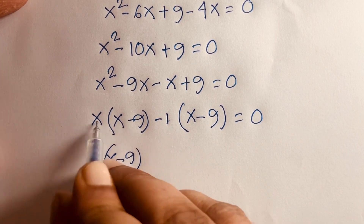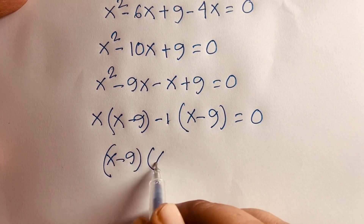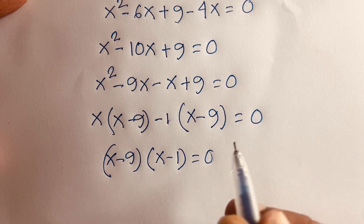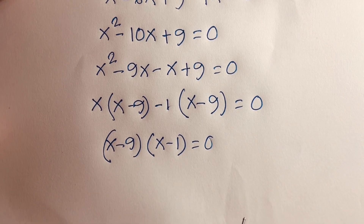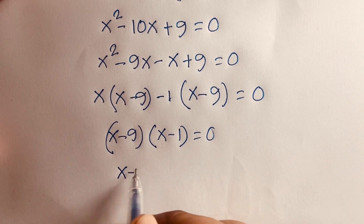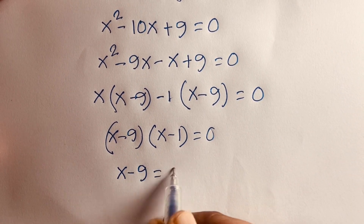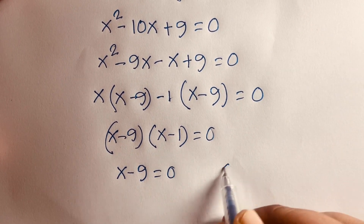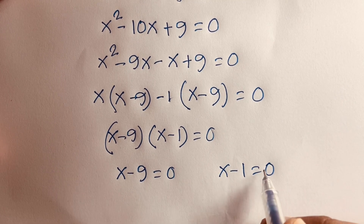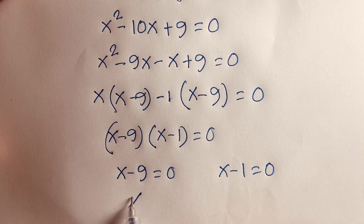Factoring gives (x - 9)(x - 1) = 0, so either x - 9 = 0 or x - 1 = 0, giving x = 9 or x = 1.